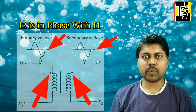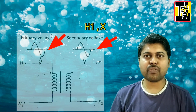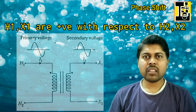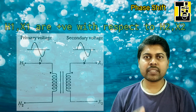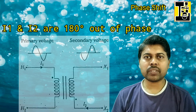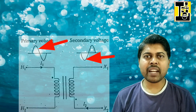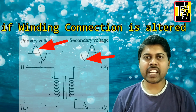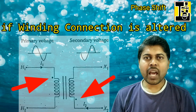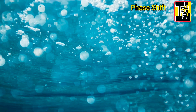Let us refresh the concept of phase shift in a single-phase transformer. The phase shift occurring between the primary and secondary currents or voltages is dependent on the primary and secondary winding connections. The polarity of the windings determines the phase shift.